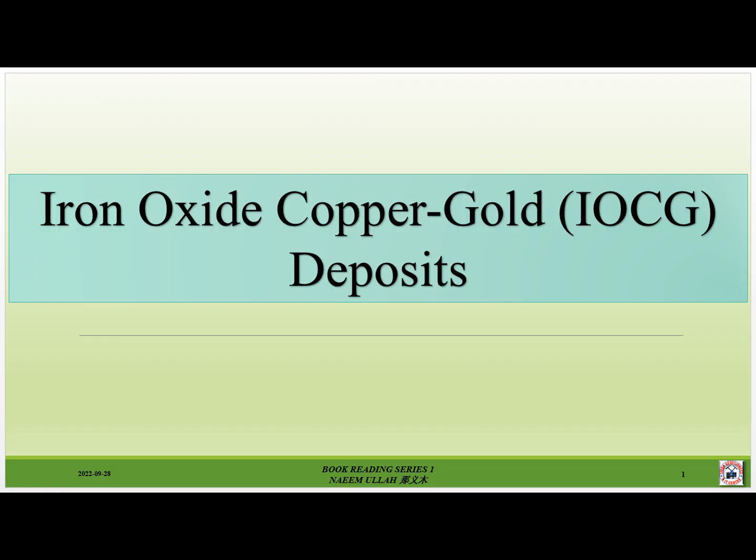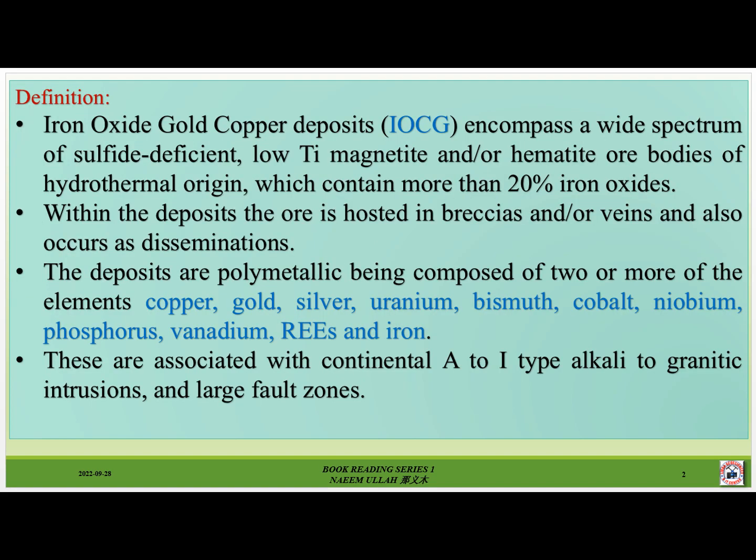Iron oxide copper gold (IOCG) deposits are defined as sulphide-deficient, low-titanium magnetite and/or hematite ore bodies of hydrothermal origin which contain more than 20% iron oxides. The ore is hosted in breccias and/or veins and also occurs as disseminations. The deposits are polymetallic, composed of two or more elements including copper, gold, silver, uranium, bismuth, cobalt, niobium, phosphorus, vanadium, rare earth elements, and iron. These are associated with continental A- to I-type alkaline to granitic intrusions and large fault zones.